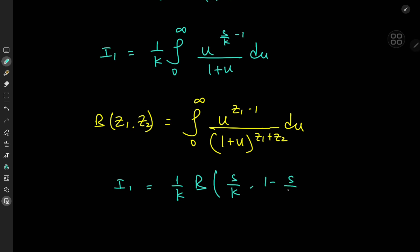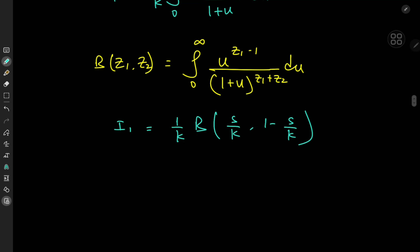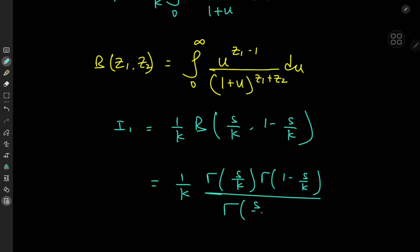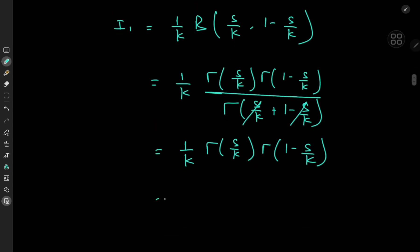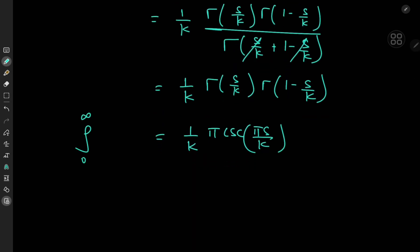So that means I should have a 1 minus s over k term here. Now invoking the very useful relationship between the beta and gamma functions, we have 1 over k times gamma(s/k) times gamma(1 − s/k), divided by gamma(s/k + 1 − s/k). We have gamma(1) in the denominator, which is of course 1, and we're left with gamma(s/k) times gamma(1 − s/k). Now we can invoke Euler's reflection formula: 1 over k times pi times the cosecant of pi·s/k. And there you have it — that's the integral from 0 to infinity of x to the s minus 1 divided by 1 plus x to the k, dx.